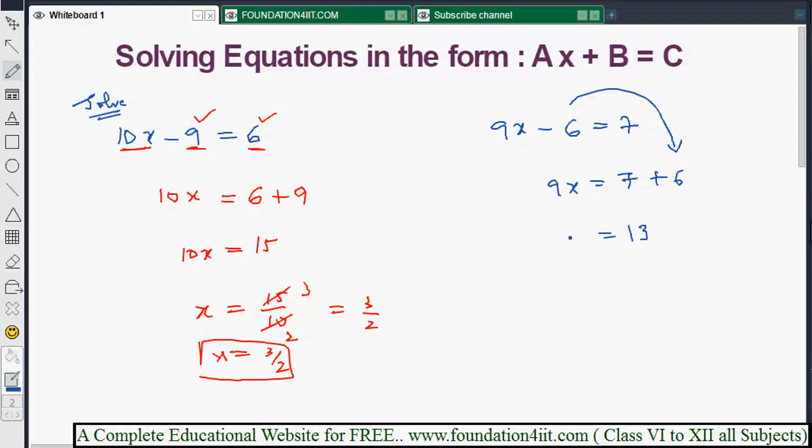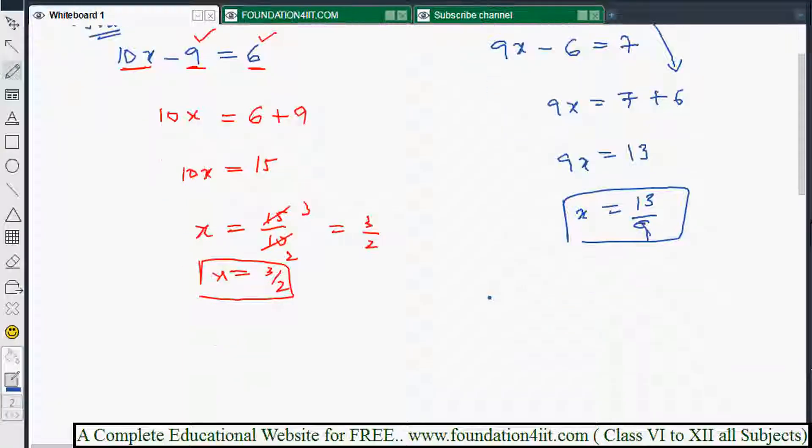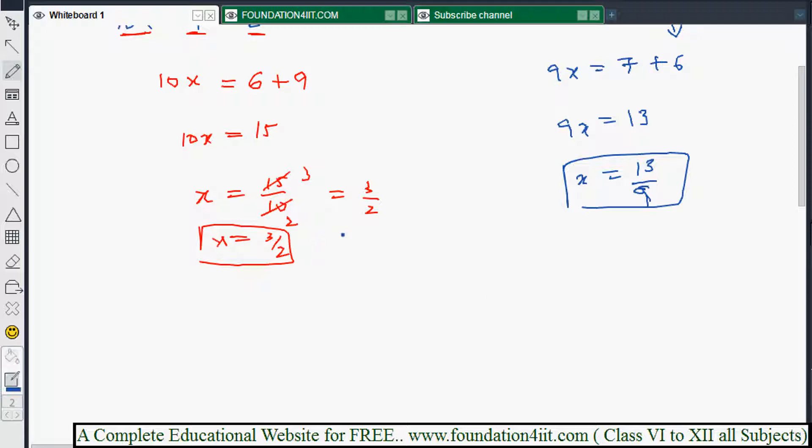This is 13 when you add. 9x, so x equals 13 by 9, because 9 times x is 13. x equals 13 divided by 9. If calculation is possible we can do it, otherwise leave as is.